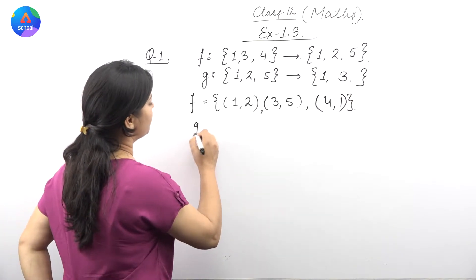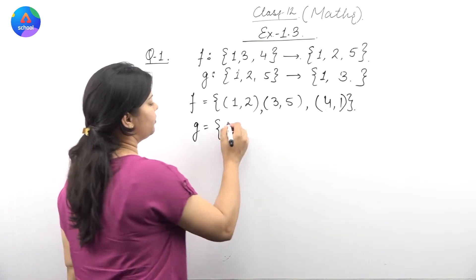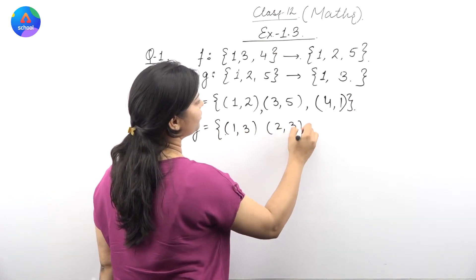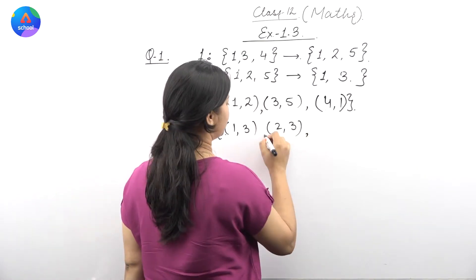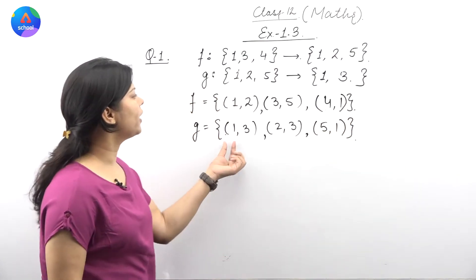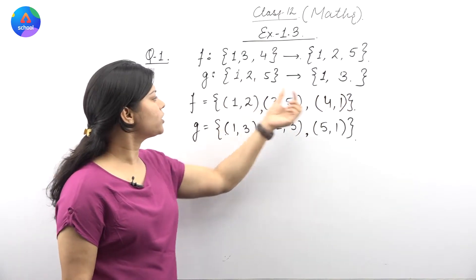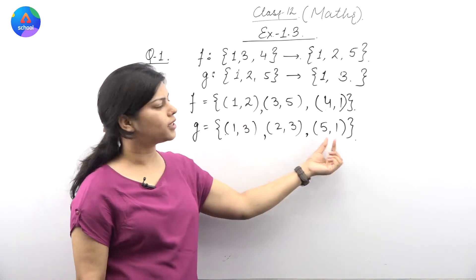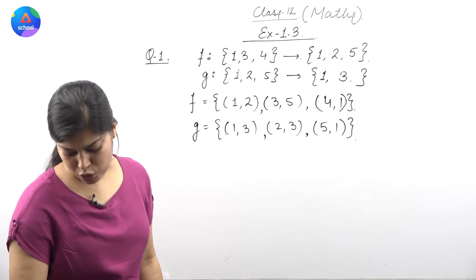Similarly, function G is also given: 1 maps to 1, 3 maps to 3, and 5 maps to 1. So there are three elements - 1 is associated with 1, 2 is associated with 3, and 5 is associated with 1 under function G.